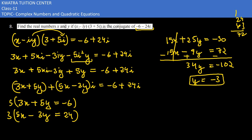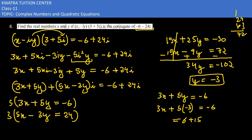Now to find x, just substitute y into one of the equations. Using the first equation: 3x plus 5y equals minus 6. Substituting y equals minus 3 gives 3x plus 5 times minus 3 equals minus 6, so 3x minus 15 equals minus 6. Taking minus 15 to the right side gives 3x equals 9, so x equals 3.